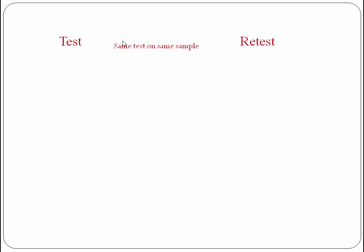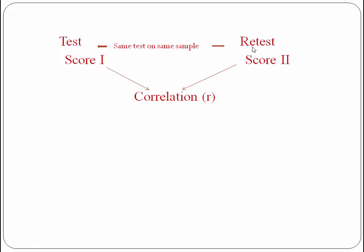We administer the same test on the same sample — first we test, and then we retest. After obtaining these two scores, we talk about the ideal time gap condition. We have the first score and the second score, and then we find the correlation using the product moment method, which is a correlation technique used to find the correlation between the first and second scores.